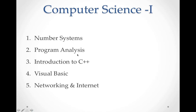In CS1, we have a total of 5 chapters. The first is Number Systems, where we will learn a lot of conversions — this is very important and is the basic foundation for further studies like BSC IT, BSC CS, and BE. Next is Program Analysis, covering how to start and write a program. Third is Introduction to C++, where you learn the basics of C++, which continues into 12th standard as well.